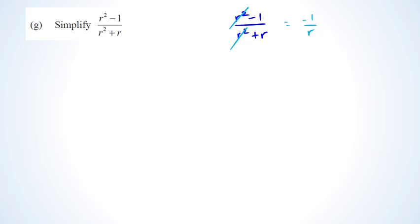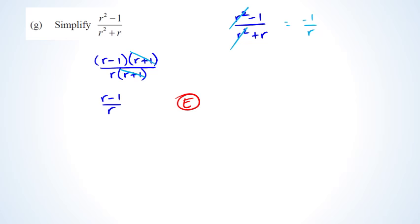Looking at the numerator, you should recognize it's a difference of two squares, so it factors as (r minus 1)(r plus 1). The denominator r squared plus r has r as a common factor, giving r(r plus 1). You can then cancel (r plus 1) from numerator and denominator, leaving the final answer (r minus 1) divided by r. That's excellence — factorizing both is merit, factorizing just one is achieved. Easiest excellence question in MCAT.